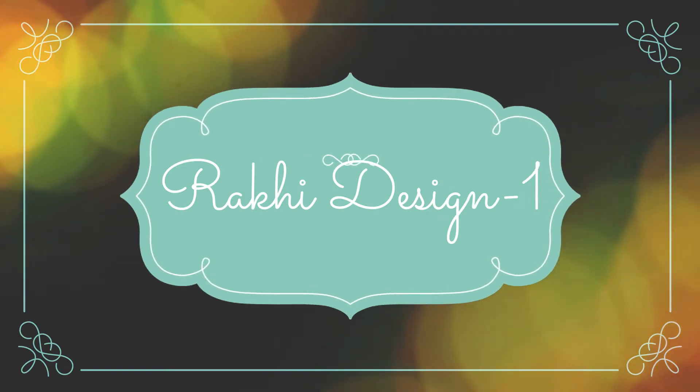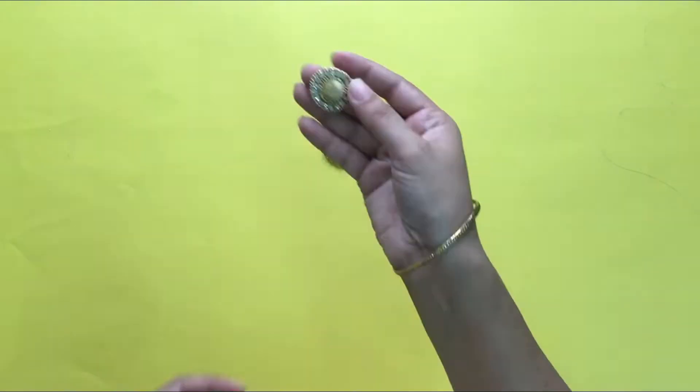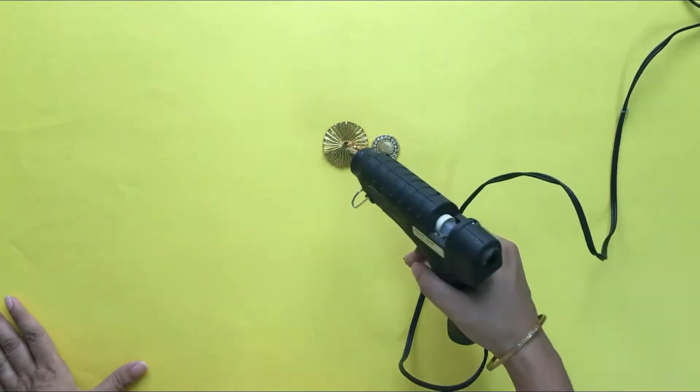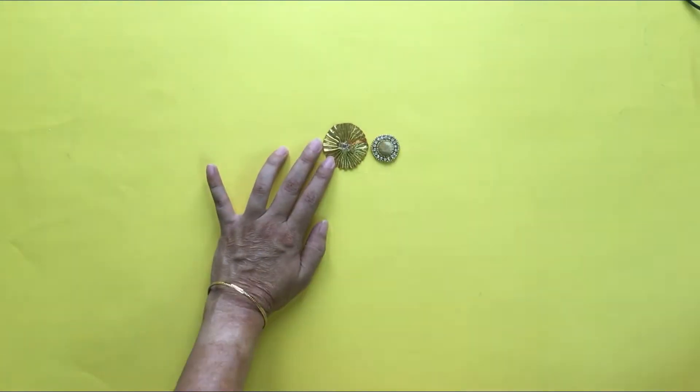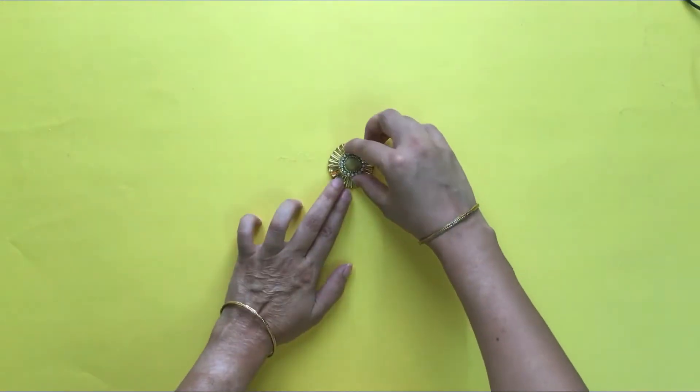For the first Rakhi, take the gotha of small size, apply the glue using hot glue gun and then stick the Rakhi top above the gotha.